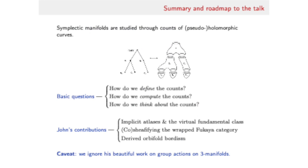They go under the slightly intimidating names of implicit atlases, Kushifying the Fukaya category, and derived orbifold bordism. I will try and say a little bit about each of these at the end of this talk, but much of what I'll do is set a stage for where his work comes in.